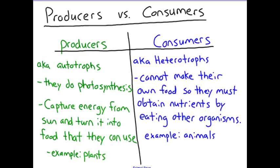The other group — and this is most often what you think of when you think of a living organism in biology — we call these consumers, also known as heterotrophs, and they get their energy by consuming other organisms. They need to eat other organisms in order to obtain their energy. An example of these would be animals.